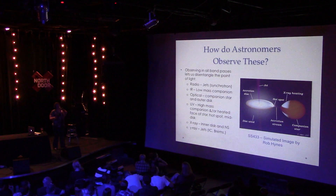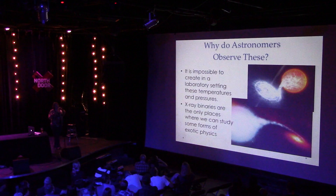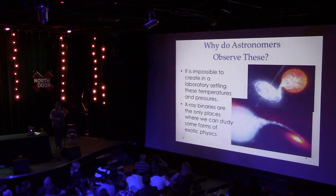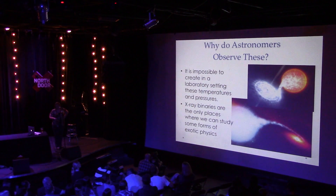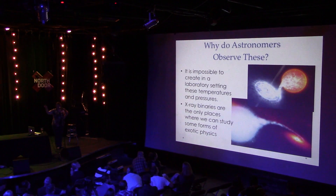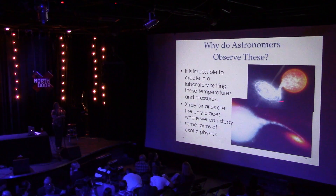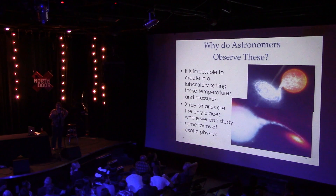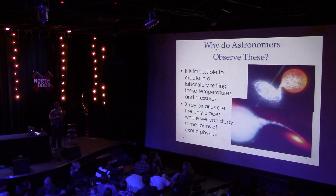Why do we observe these? It's really impossible to create these temperatures and pressures in a laboratory setting. It's a very exotic type of plasma physics, often with very high magnetic fields that we can't generate in a lab. So nature has kindly produced these things for us in space, and we can observe them to understand some really exotic physics. X-ray binaries are one of the few systems where by looking at different wavelength regimes we can actually discern what the disc looks like.